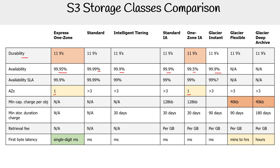For AZs, everything pretty much operates in three or more, with the exception of the one-zone classes. For minimum capacity charge per object, Standard IA and One Zone IA have 128 kilobytes — you need at least 128 kilobytes for those. For Glacier Flexible and Deep Archive, the 40-kilobyte minimum comes from metadata on top of whatever you're storing, so putting a 40-kilobyte file in will add 40 kilobytes to the file.